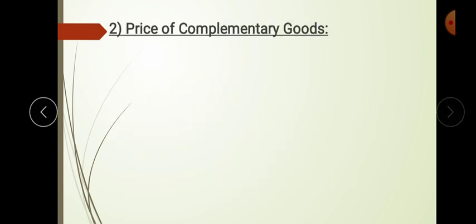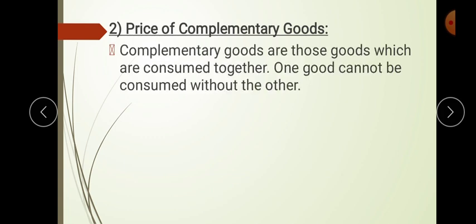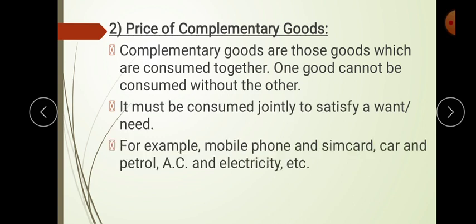Complementary goods are jointly consumed products. For example, if you want to drive a car, you have to fill up petrol — car and petrol are complementary goods. Similarly, if you switch on an AC, it consumes electricity — so demand for AC also requires demand for electricity. If you want to travel by car, you need fuel, either petrol or diesel. So these goods are always demanded together.